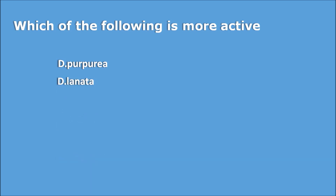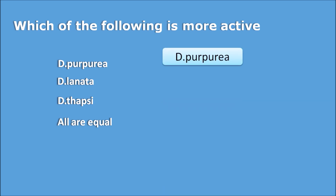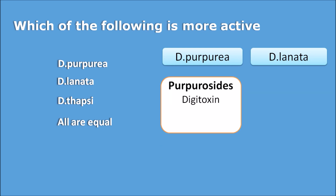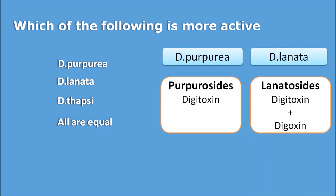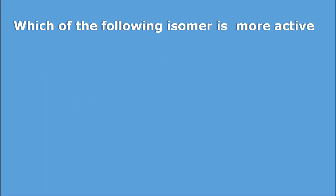Another question: which of the following is more active, Digitalis purpurea or Digitalis lanata? Digitalis purpurea contains purpureoglycosides which have digitoxin as an important glycoside. Digitalis lanata contains lanatoside glycosides which have digitoxin along with digoxin, plus more alkaloid content and extra digoxin. So Digitalis lanata is more active compared with Digitalis purpurea — option B is the right answer.